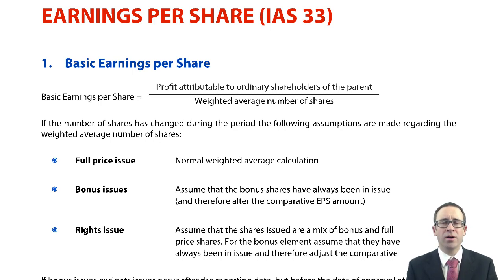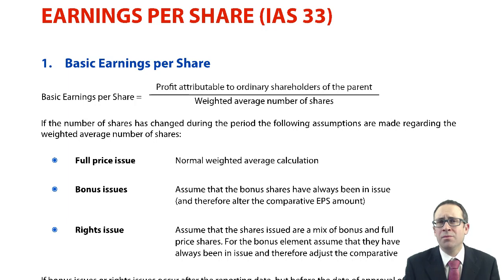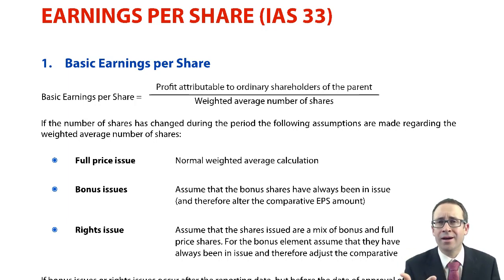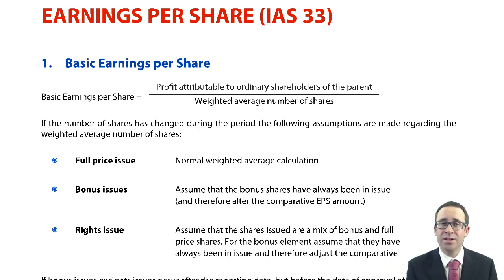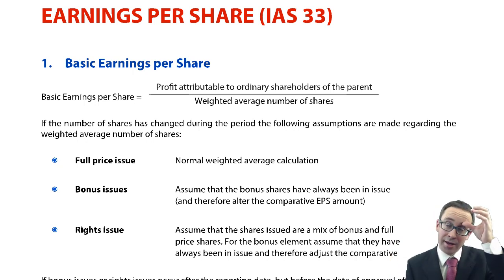So building upon what you've seen previously in your analysis and interpretations that you did within F7. But from experience, there hasn't really been any analysis and interpretations questions covered within P2. It's not set up that way. Question one is groups. Questions two and three look at the exact accounting standards, and then question four covers current issues. There are no current issues surrounding this, so I wouldn't have thought you would get examined on earnings per share in questions two or three.